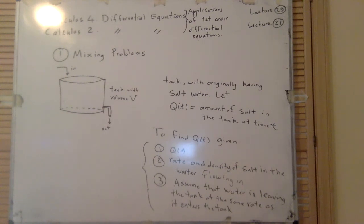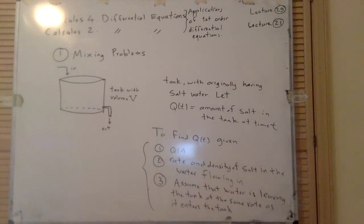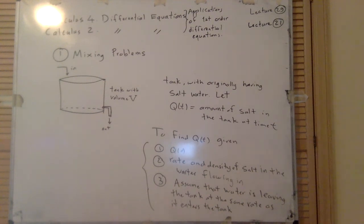The first type of problem we discuss is mixing problems. A mixing problem is one where you have a tank full of something — usually salt water. We let Q(t) be the amount of salt in the tank at time t, and we want to find Q as a function of time.